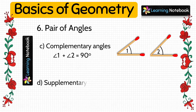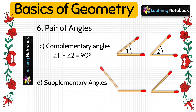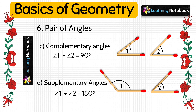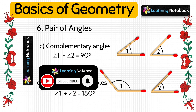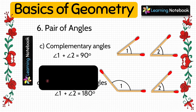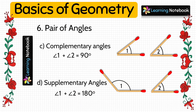The next pair of angles is supplementary angles. Two angles are said to be supplementary angles if the sum of their measures is 180 degrees. Students, we will again paste four matchsticks to form angle 1 and angle 2, but this time angle 1 plus angle 2 equals 180 degrees.